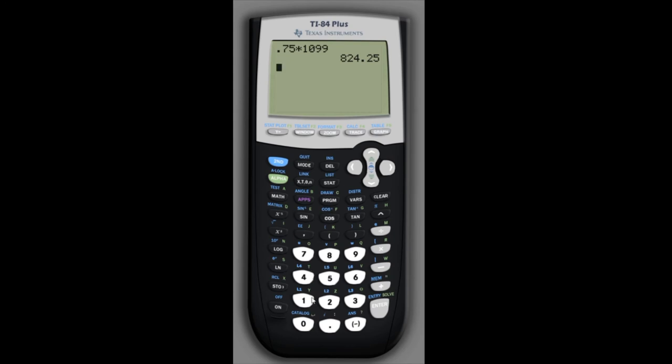Here I can type in 1.08 times $824.25, but since I have that sale price as my last answer already, I can just type times 1.08 and it will use the previous answer. I could also, of course, just type 1.08 times the value, and of course it comes out to the same thing either way.